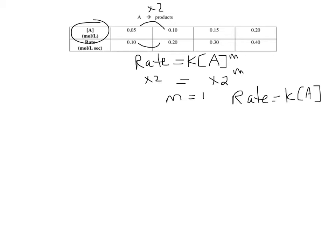Then I'm going to go ahead and plug in some data. I'll take the first one again, because it doesn't matter. And the rate is 0.1, and that equals K times the concentration of A, which is 0.05. So K, I believe if I take 0.1 and divide it by 0.05, I get 2.